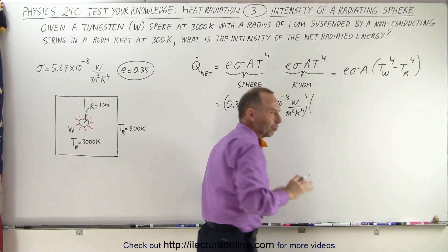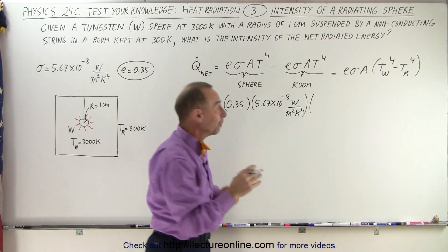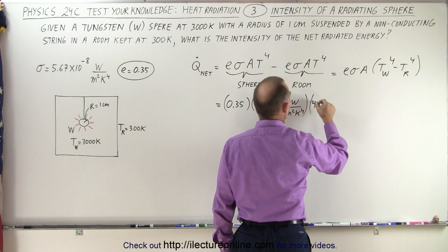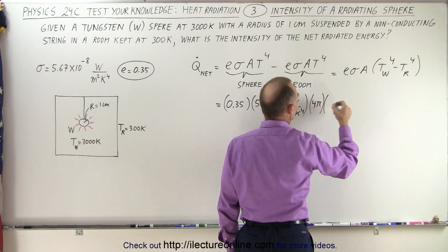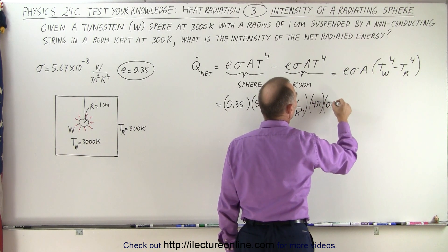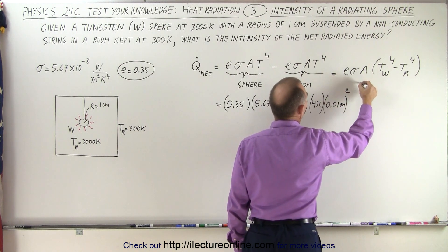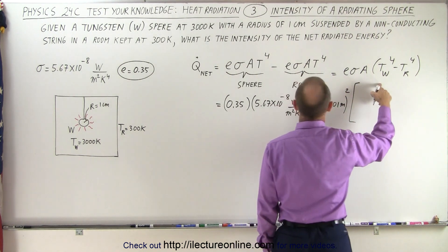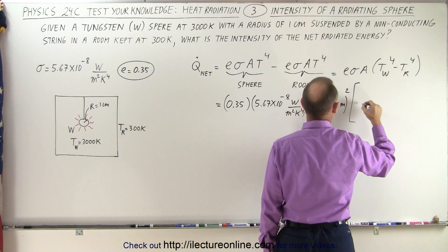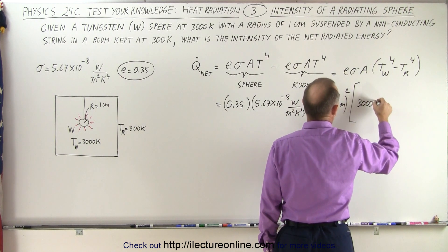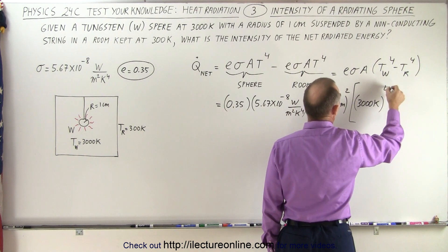times the area. Now, the surface area of the sphere, which is 4 pi times the radius squared, so it would be 4 pi times the radius converted to meters, which is 0.01 meters squared, then we have to multiply times the temperature of the sphere to the fourth power, that's 3,000 Kelvin to the fourth power,